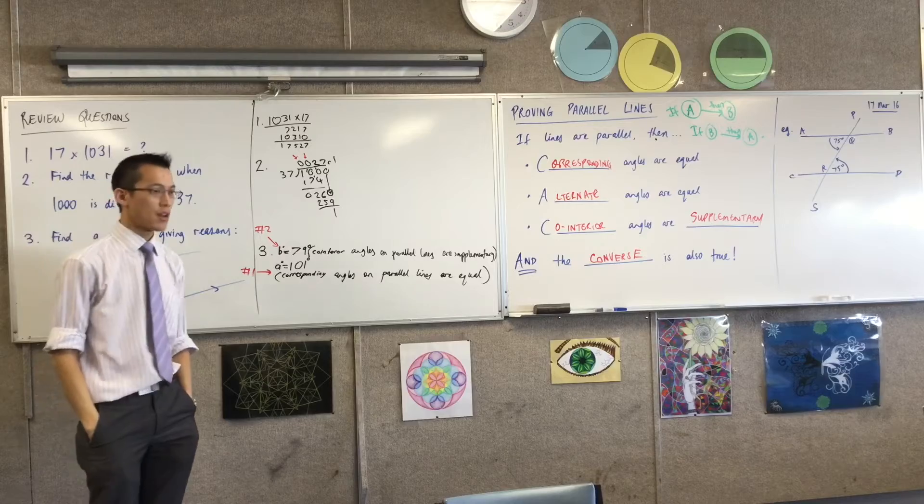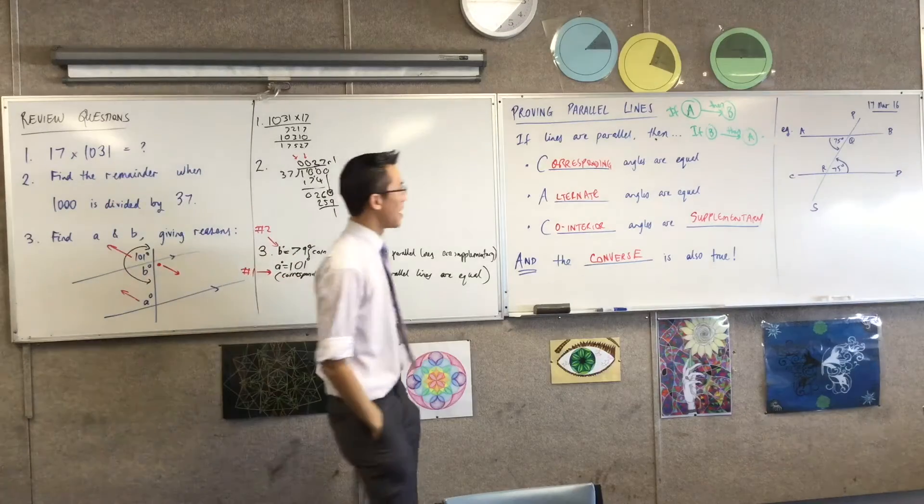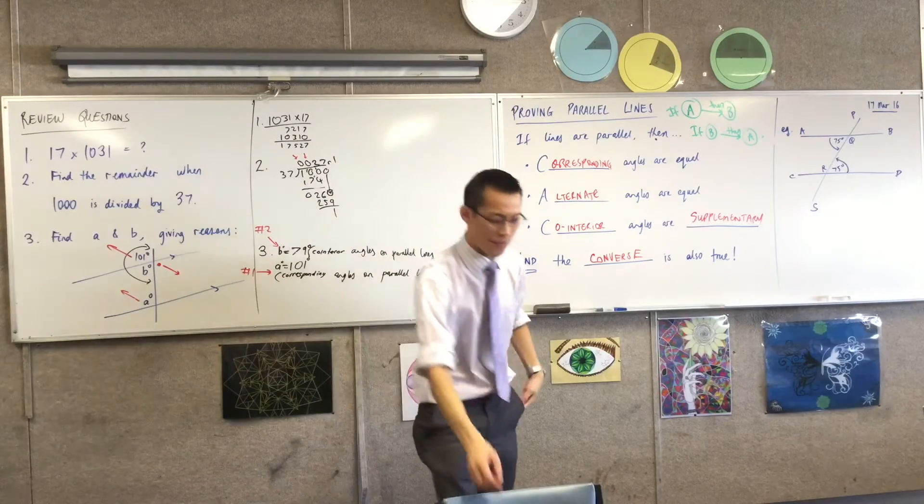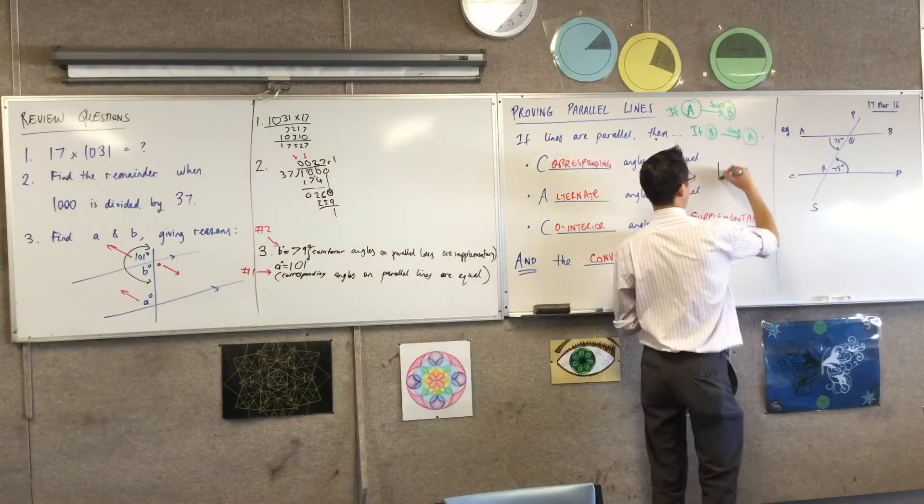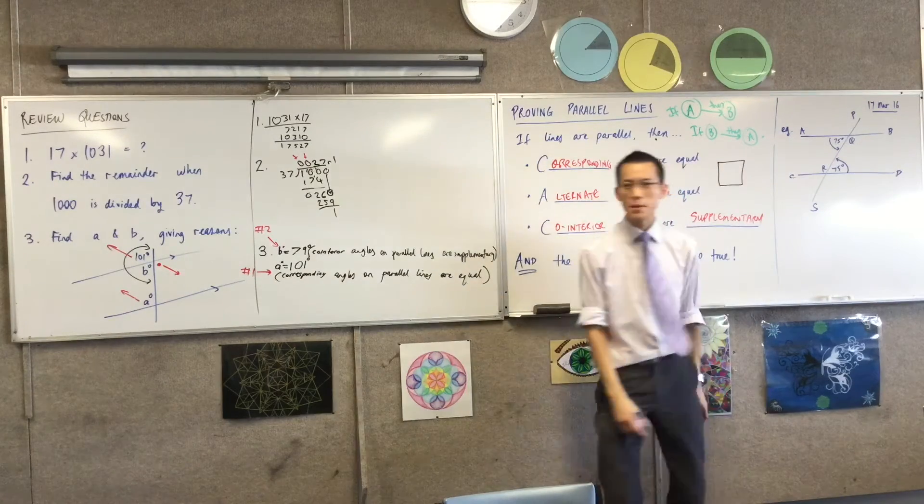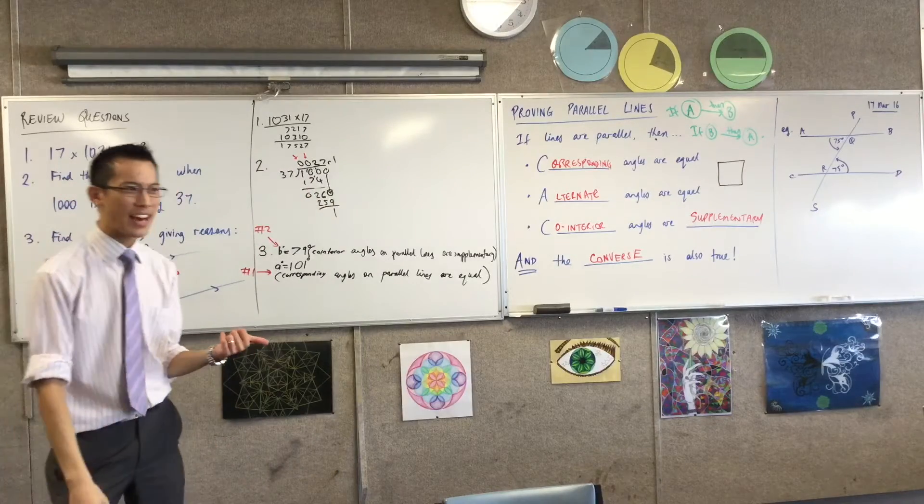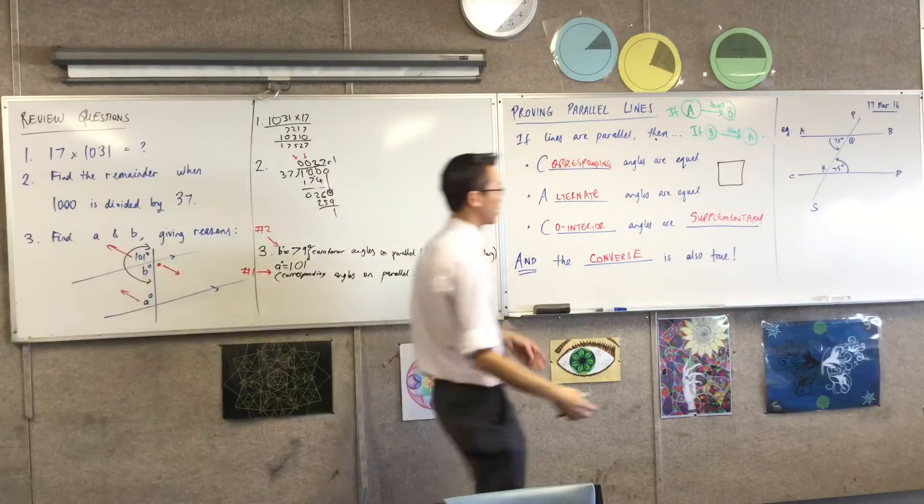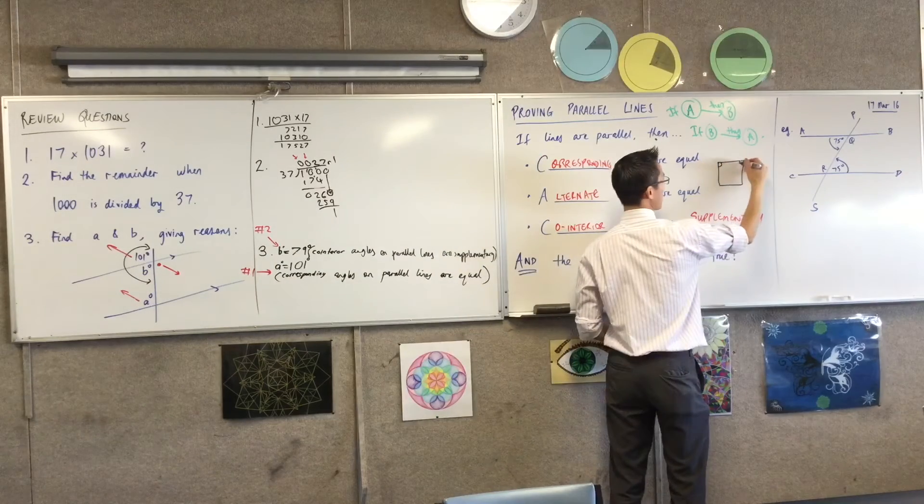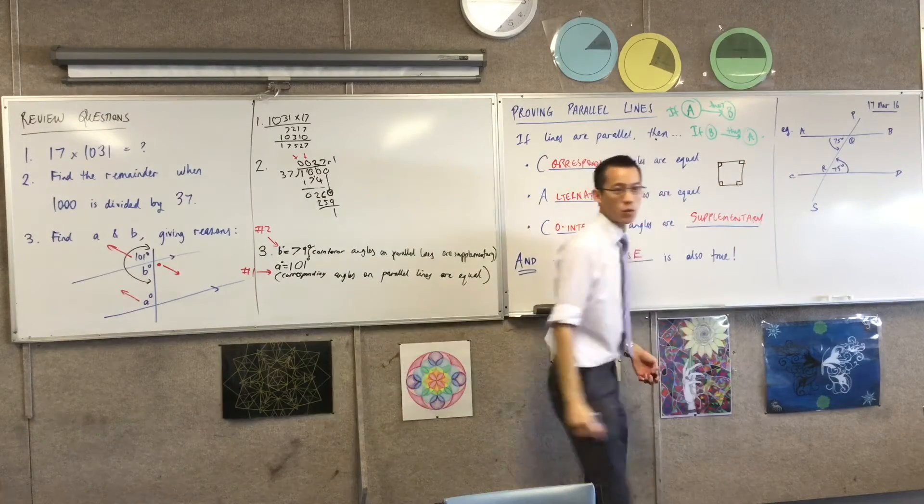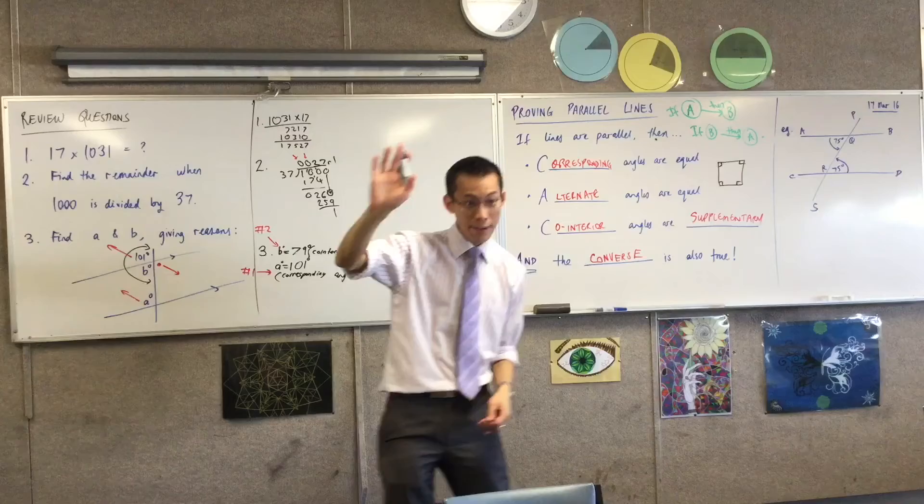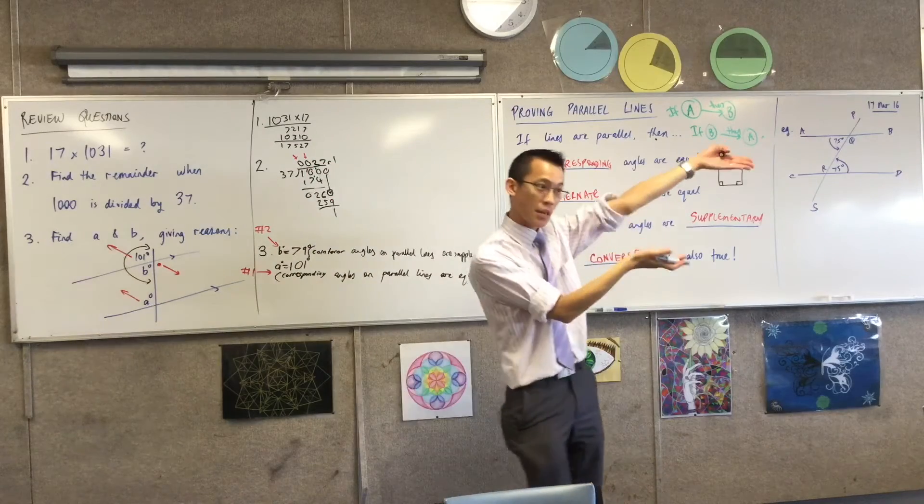For instance, I could say, you know, I have a square. If a shape is a square, then it's also a rectangle. Do you agree with that? Like, all of them are 90 degrees, so that's what makes a rectangle a rectangle. So if my shape is a square, then it's also a rectangle. You can hear my if something, then something else.